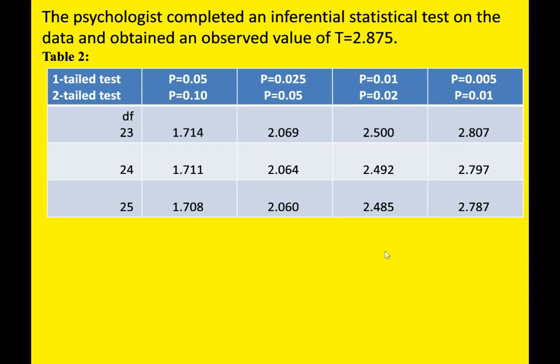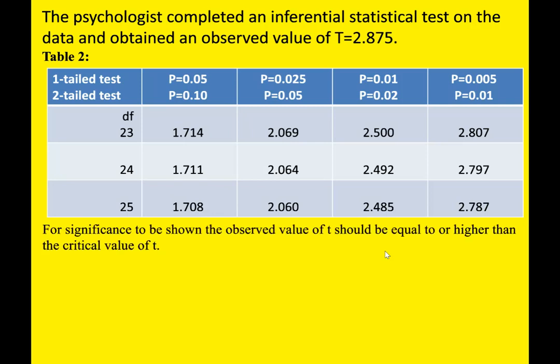Looking at the top left-hand corner of the table, you can see it says 'one-tailed test' and 'two-tailed test.' Usually the question will tell you which one to use, or you may need to pick it up from the stimulus — if you have previous research, you'd have a directional hypothesis and would select a one-tailed test. Across the top row you can see the probability levels; for a one-tailed test it starts at p = 0.05. There are four different probability levels shown for both one-tailed and two-tailed tests, and underneath the table it tells you whether your observed value needs to be higher or lower than the critical value.